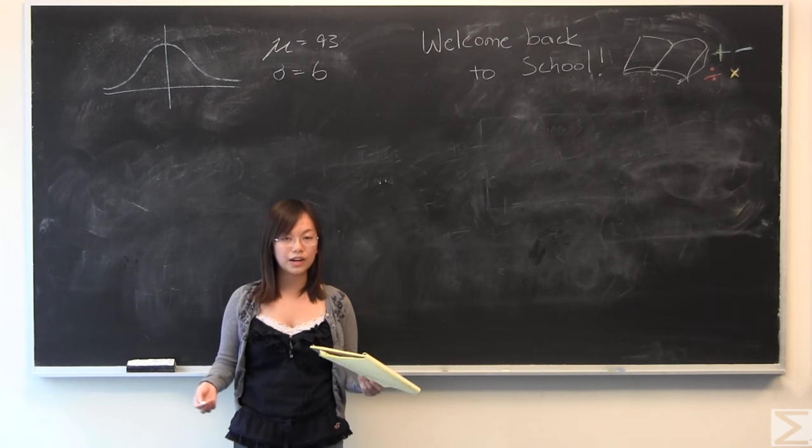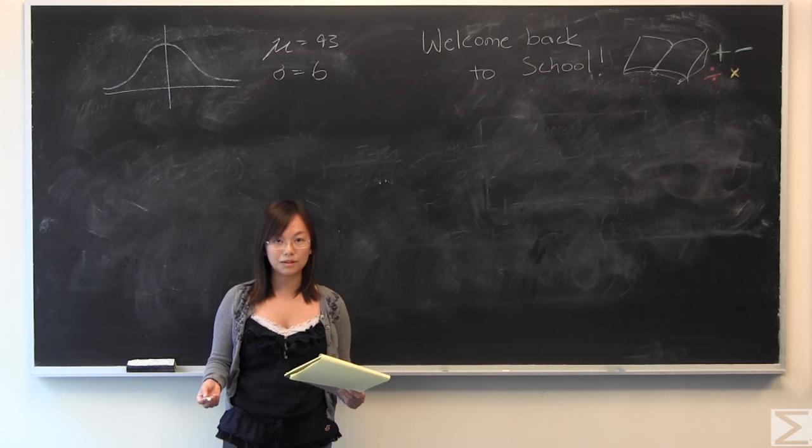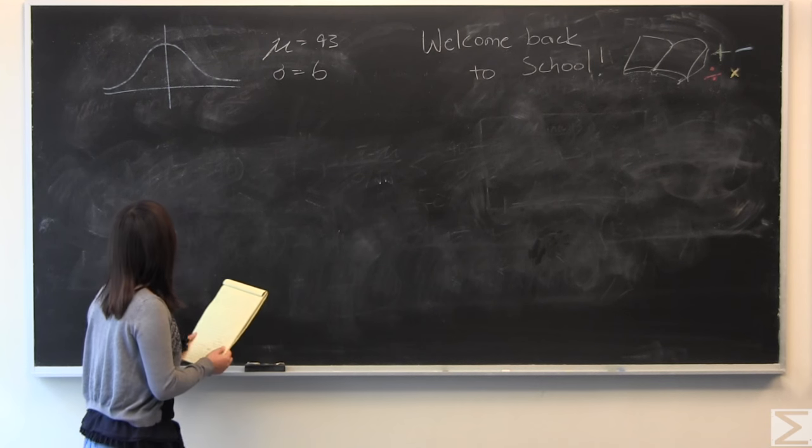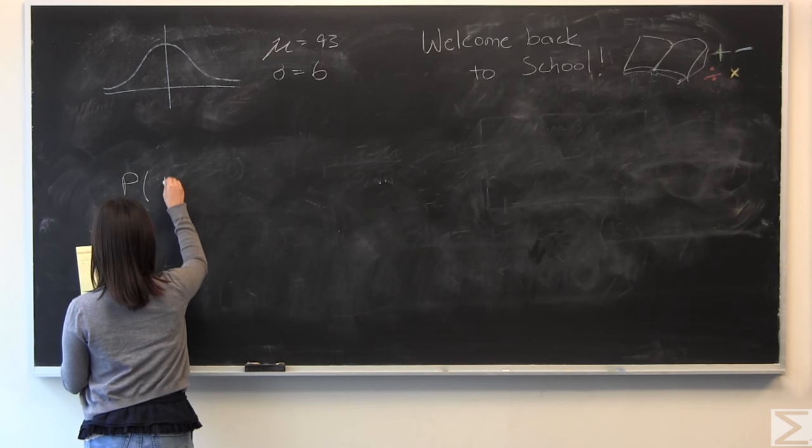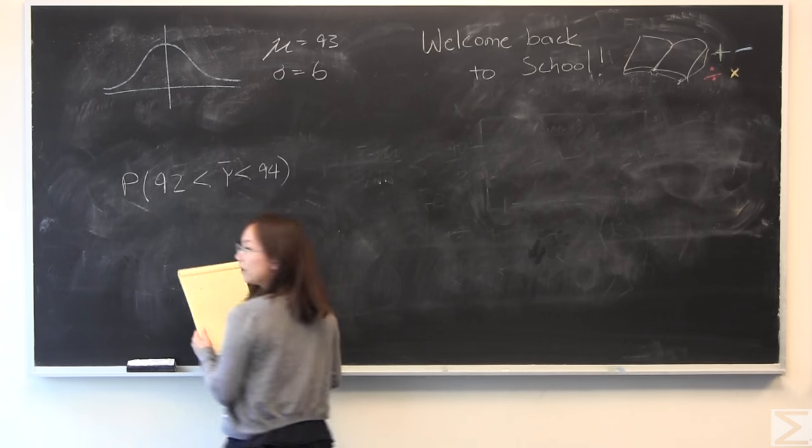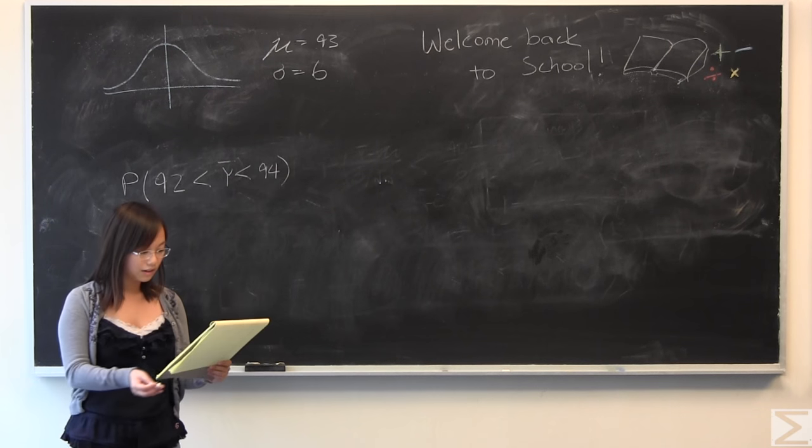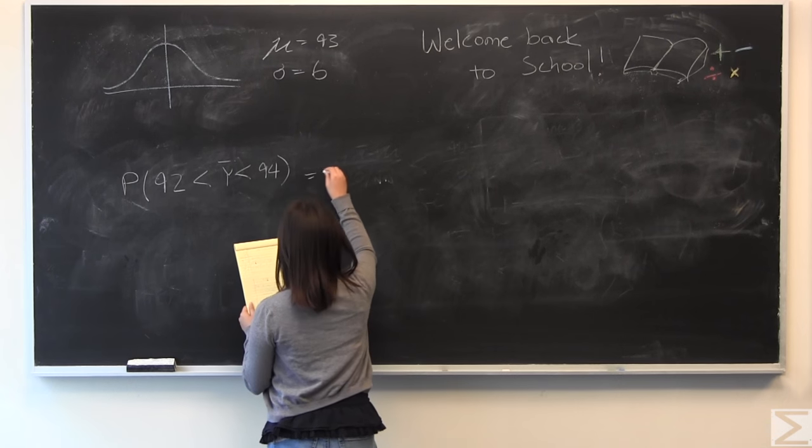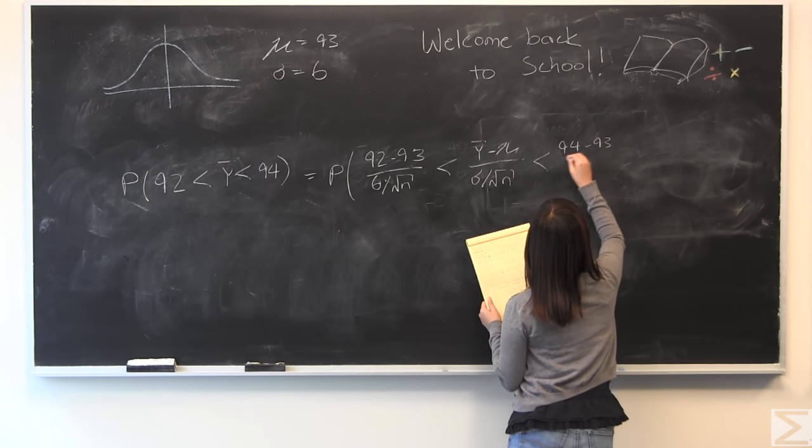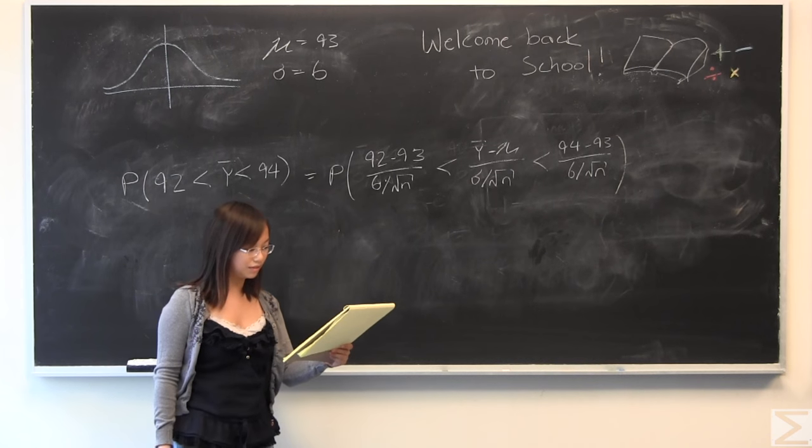The second part of the question doesn't give you an n, but rather asks for how many people would you need to take in order for your probability of the average test score being between 92 and 94 to be greater than 60%. It's a very similar problem with a very similar setup, but instead we are going to write this down. Again, set up the problem, ready to process it and use a z-table to find our answer.